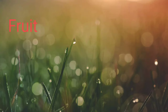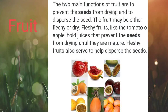Now, let us learn about the last part of the plant — fruit. Fruit has two main functions. Fruits help in dispersal of seeds. They also prevent the seeds from drying until they get matured.